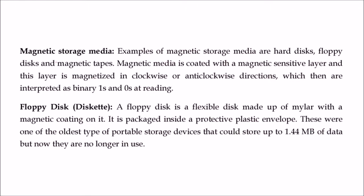Magnetic storage media includes hard disks, floppy disks, and magnetic tape. These all have a magnetically sensitive material that can be magnetized clockwise or anti-clockwise, which is later interpreted as 1 or 0.